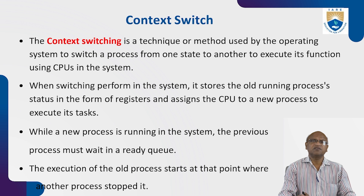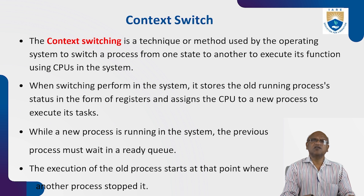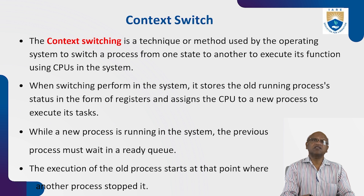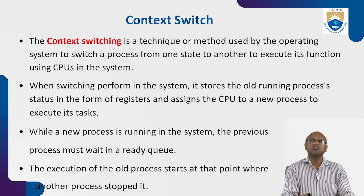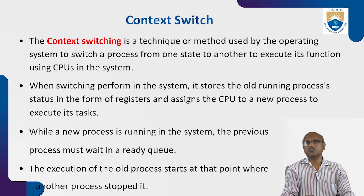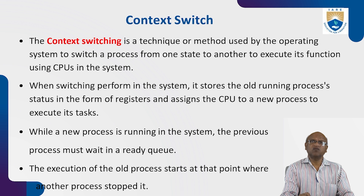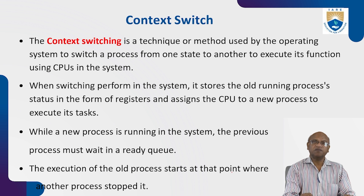The next concept is the context switch. The microprocessor is always running, but it switches from one process to another. The context switch is a technique or method used by the operating system to switch a process from one state to another state to execute its function using the CPU. It stores the currently running process's status in the form of registers and sends the CPU to a new process to execute tasks.